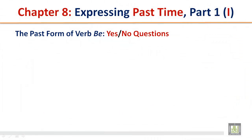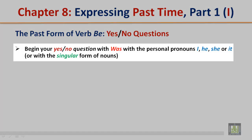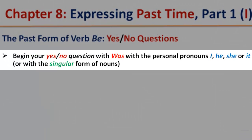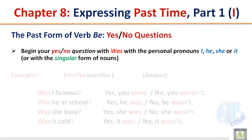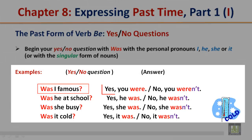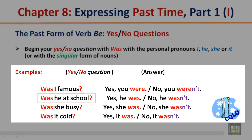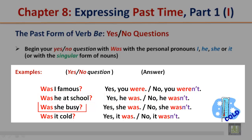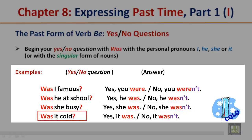The past form of verb be — yes or no questions. Begin your yes or no question with 'was' with the personal pronouns I, he, she, or it, or with the singular form of nouns. Examples: Was I famous? Yes, you were. No, you weren't. Was he at school? Yes, he was. No, he wasn't. Was she busy? Yes, she was. No, she wasn't. Was it cold? Yes, it was. No, it wasn't.